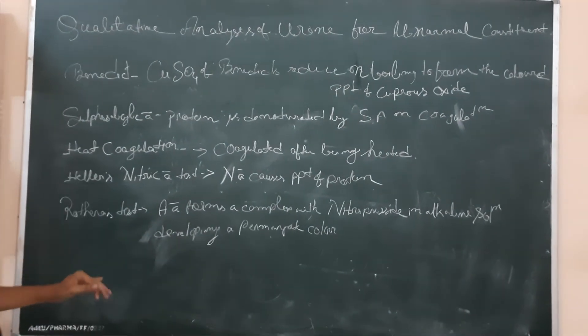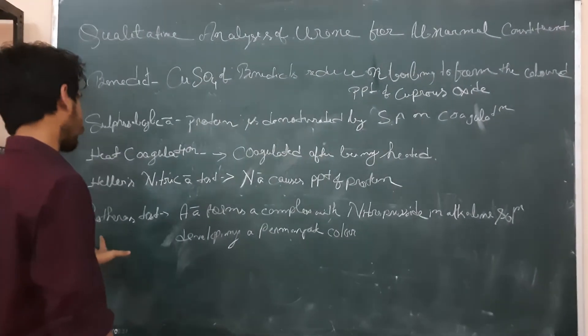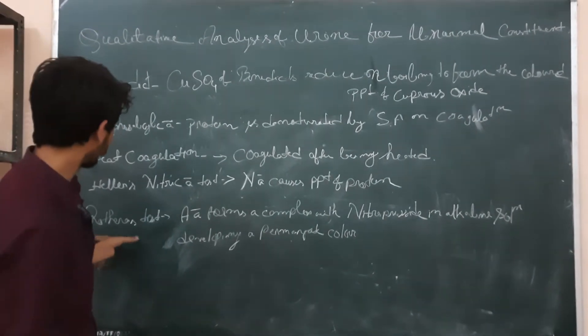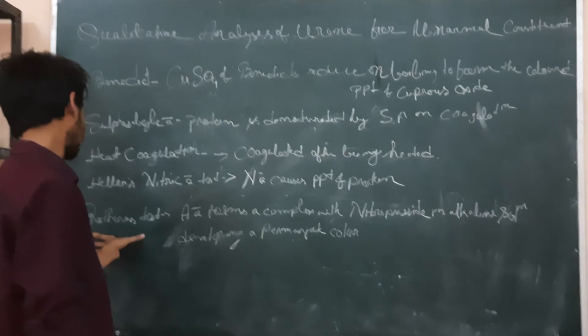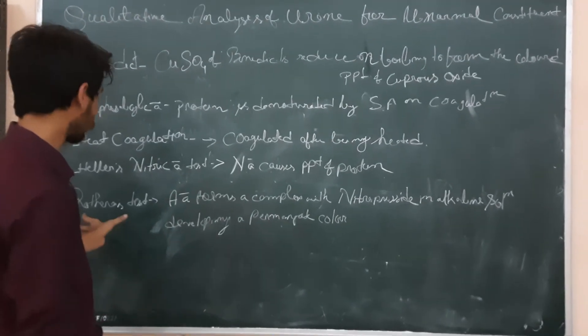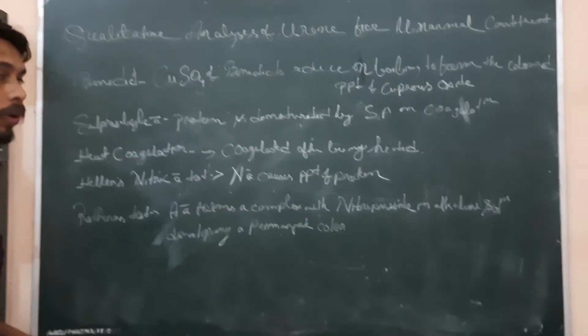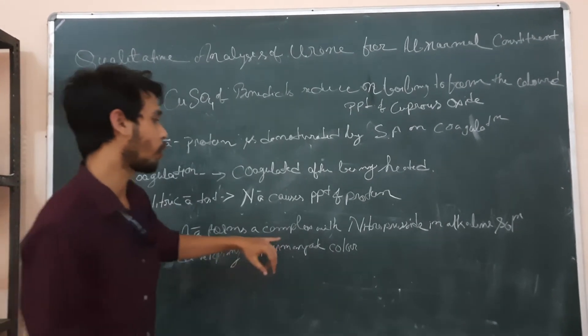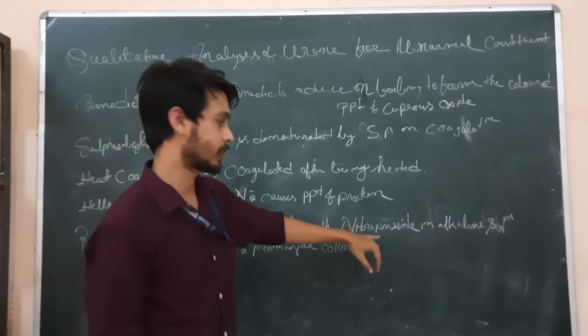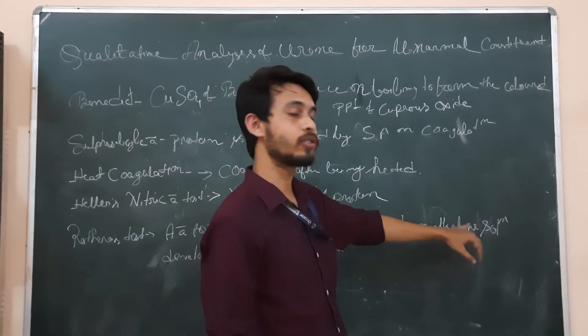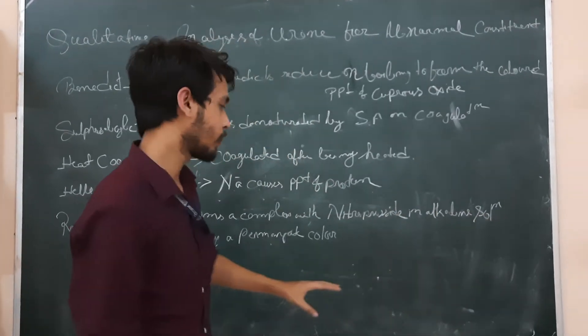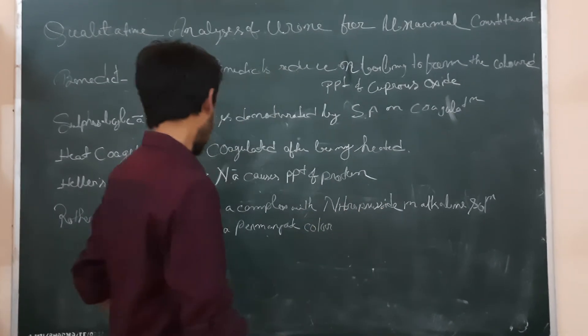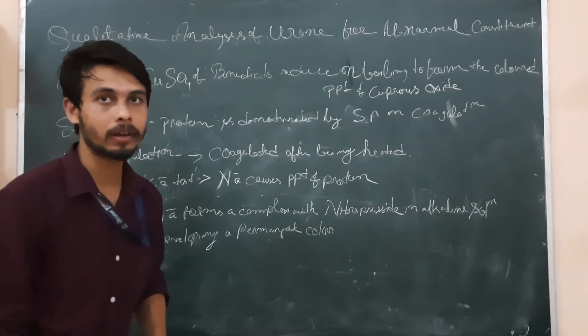Then last one is Rothera test. This test we will perform to determine the ketone bodies in urine. So to perform this Rothera test, we have to use ammonium sulfate. So acetic acid forms a complex with nitroprusside in alkaline solution. In alkaline medium, acetic acid forms a complex with nitroprusside and we develop a permanganate color.